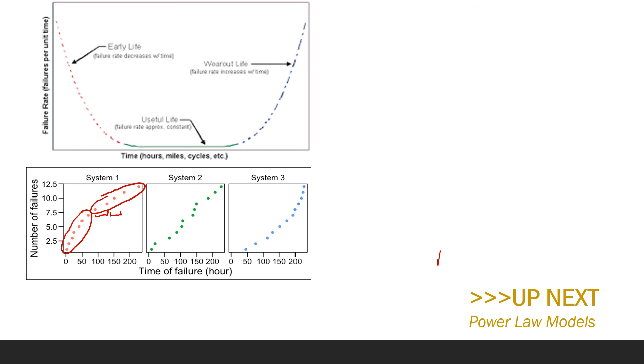Now systems that exhibit significant curvature in this plot, like systems 1 and 3, are typically modeled using a non-stationary process like NHPP because the time between failures is not constant like it is in system 2.